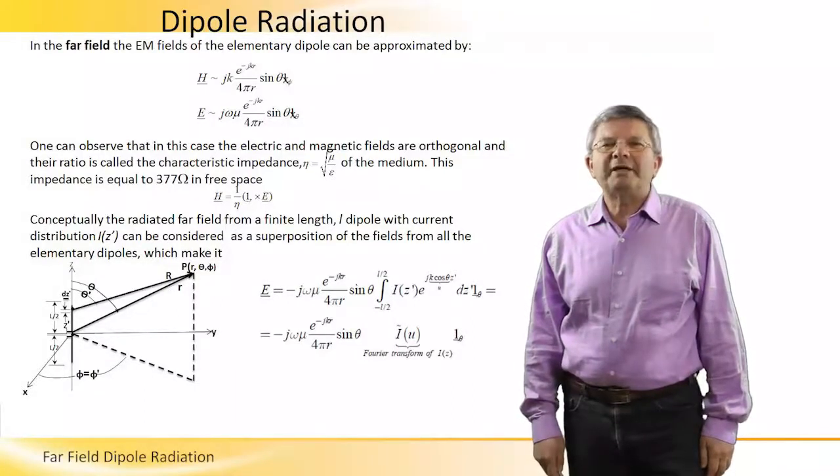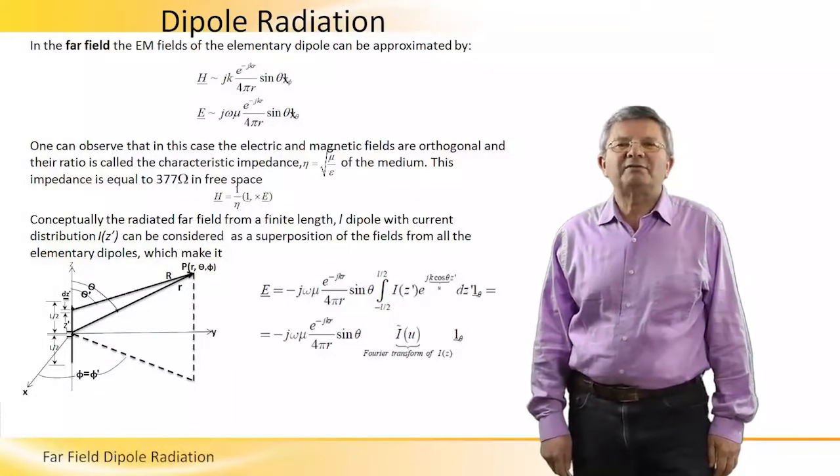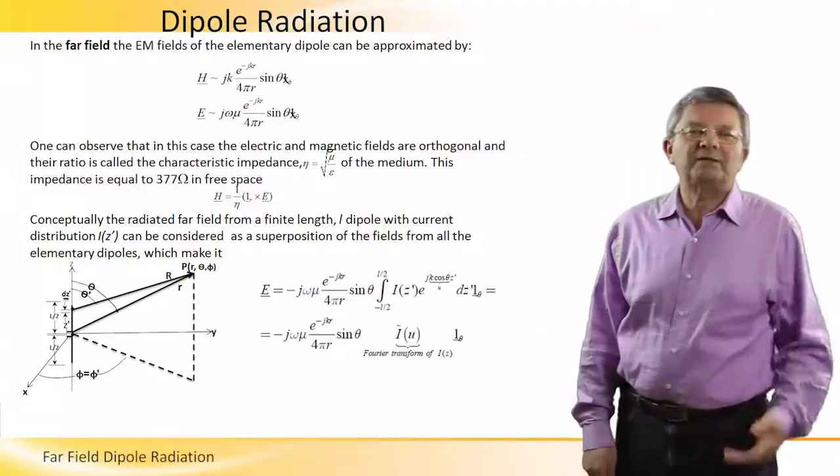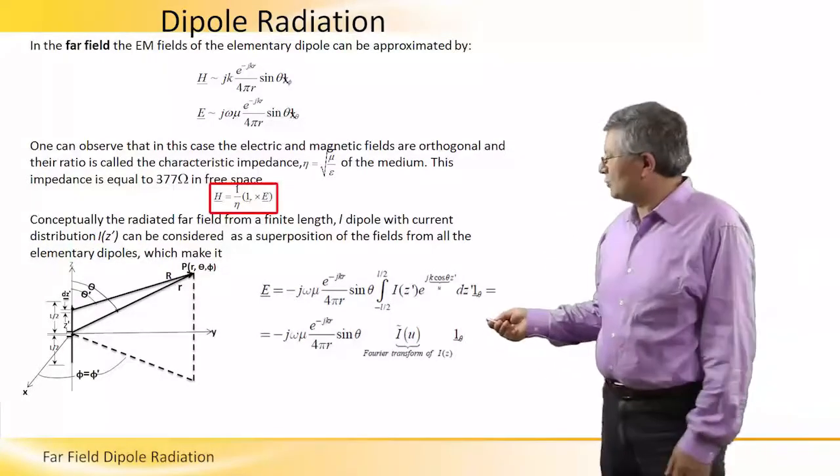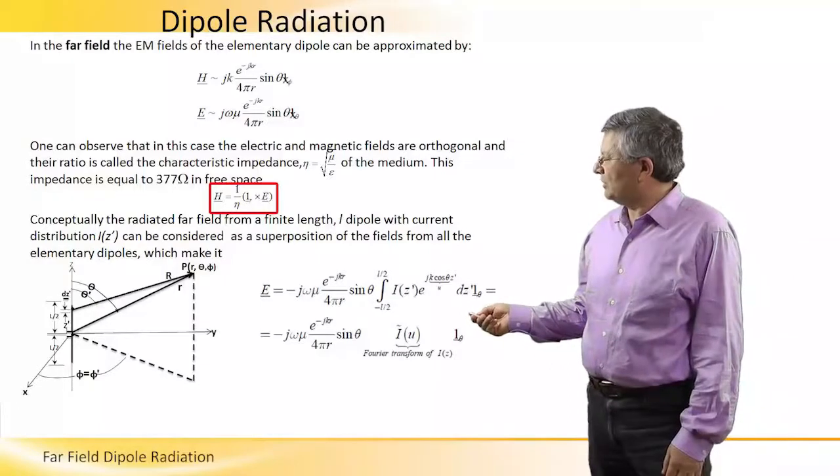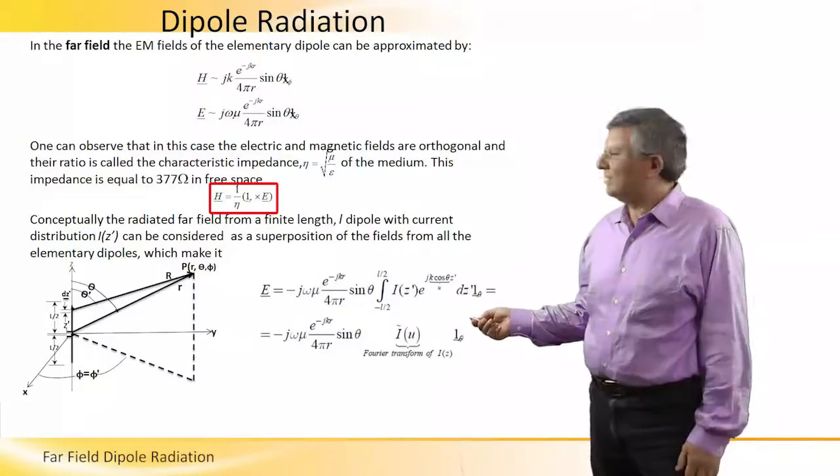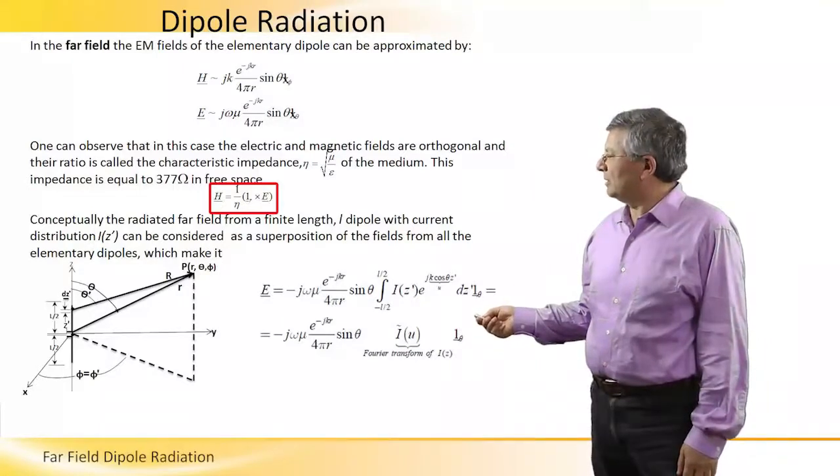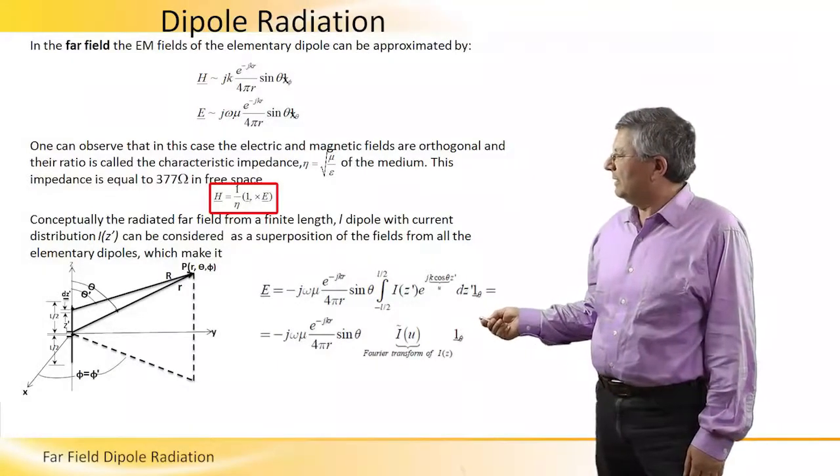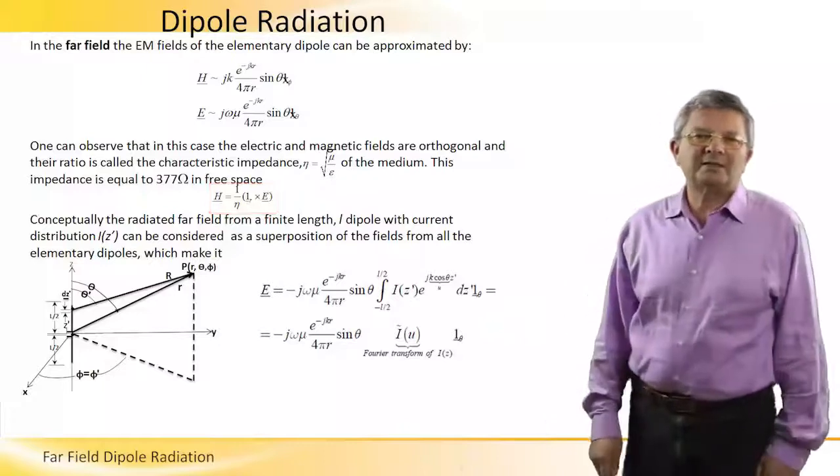The orthogonality between the magnetic and electric fields for far field approximation can be represented by this equation: H is equal to 1R, the propagation direction of the spherical wave, multiplied vectorially by the electric field and divided by the characteristic impedance.